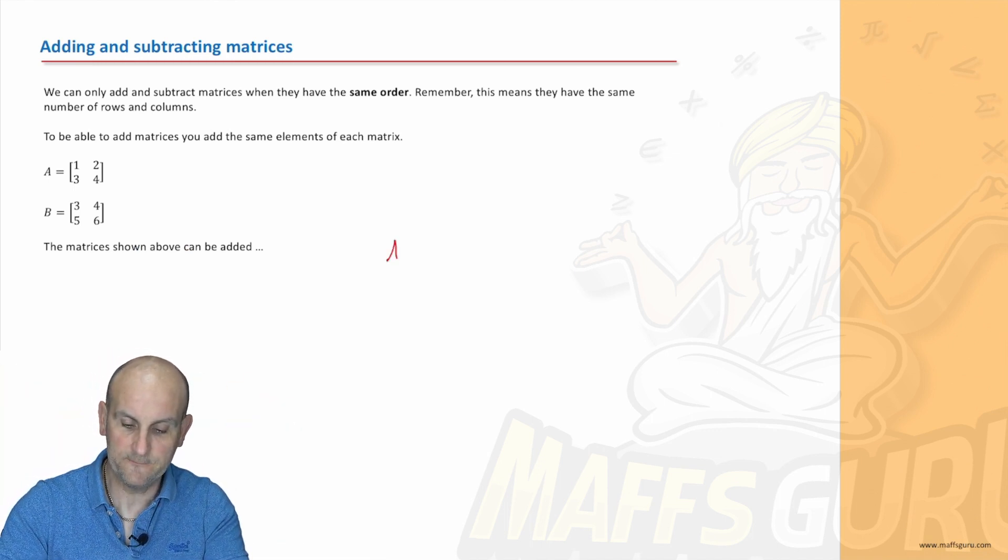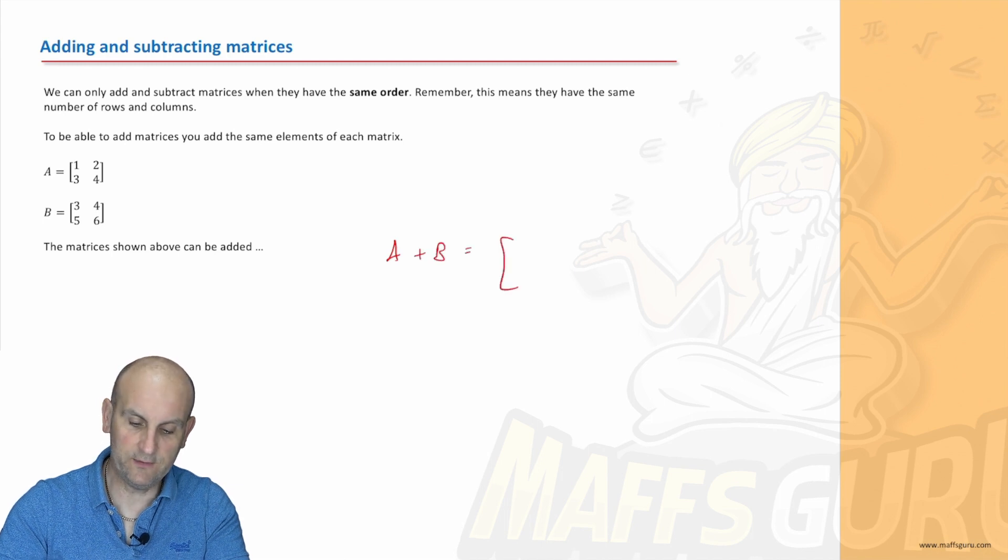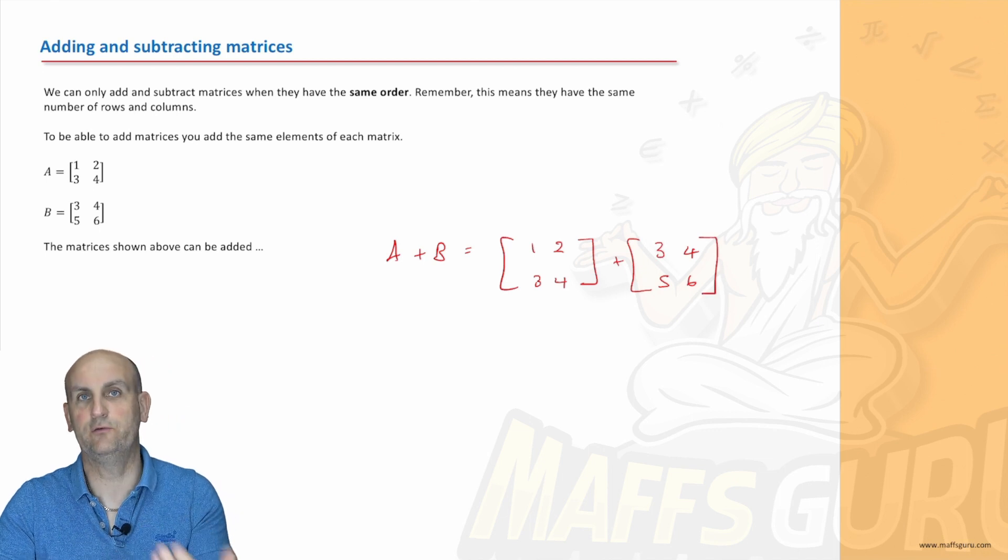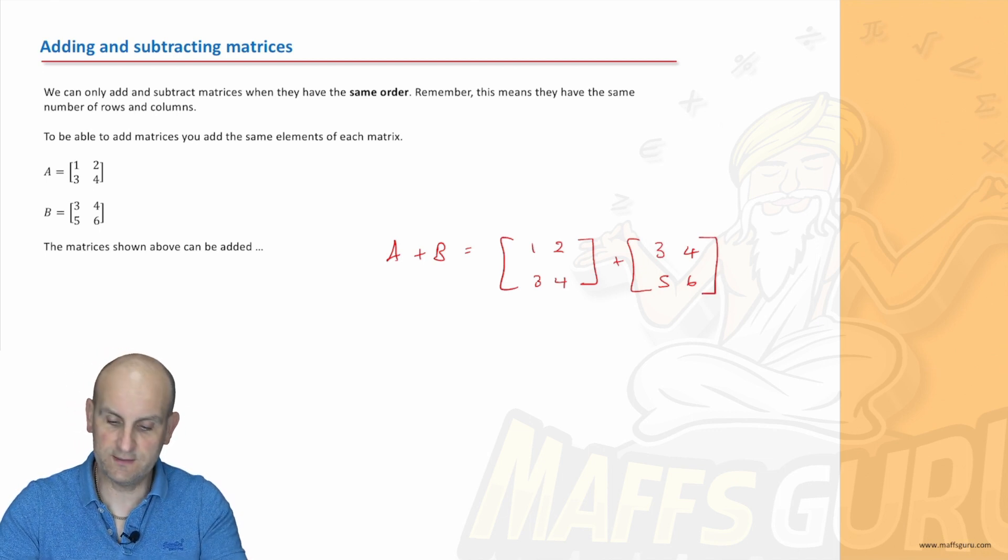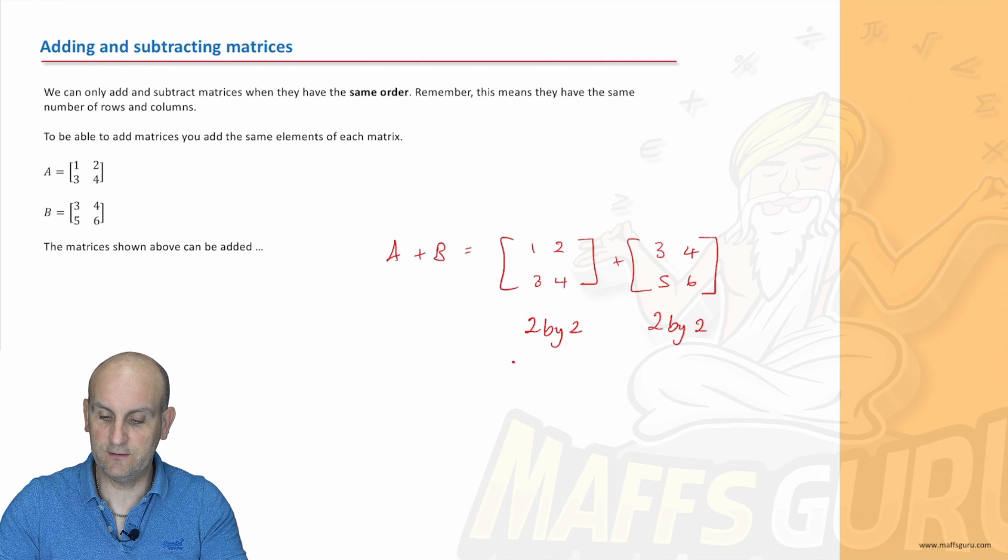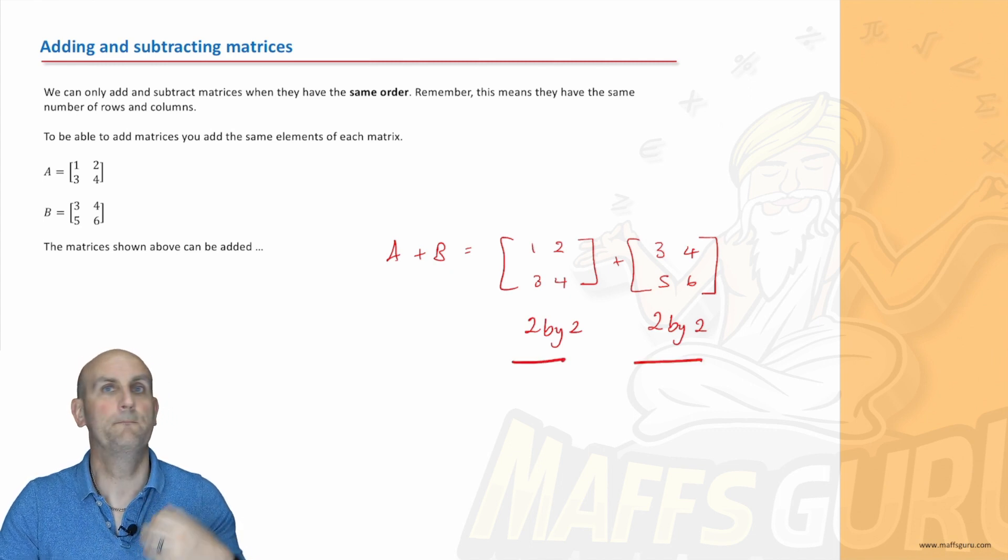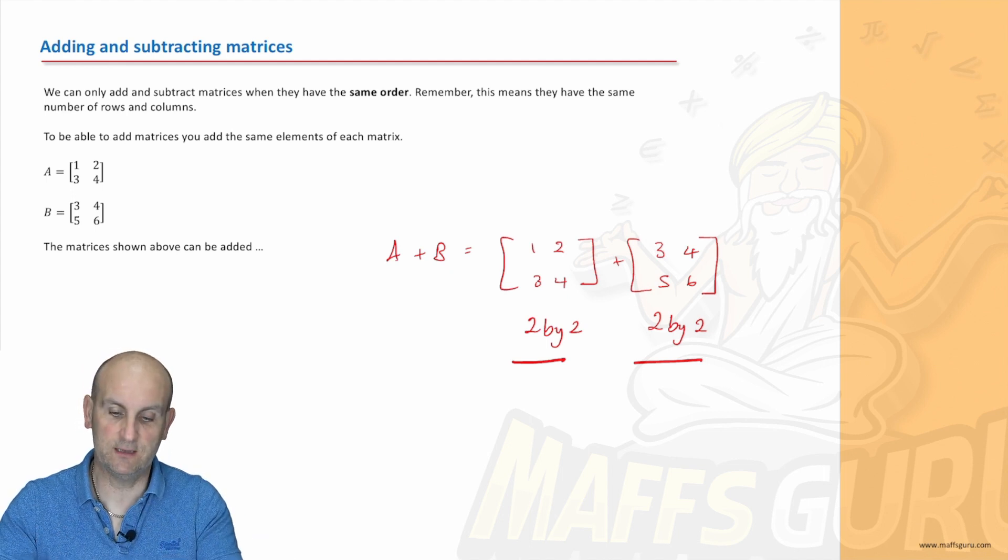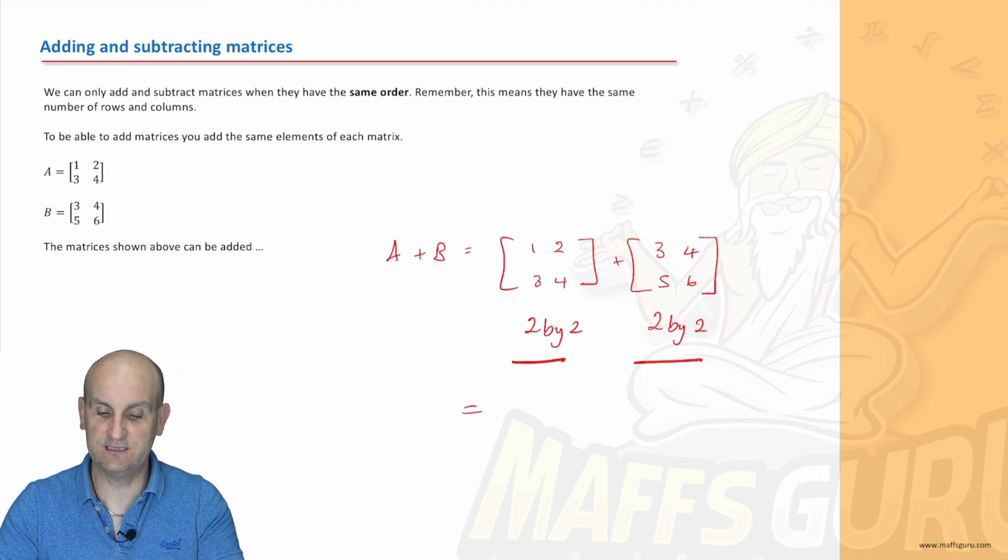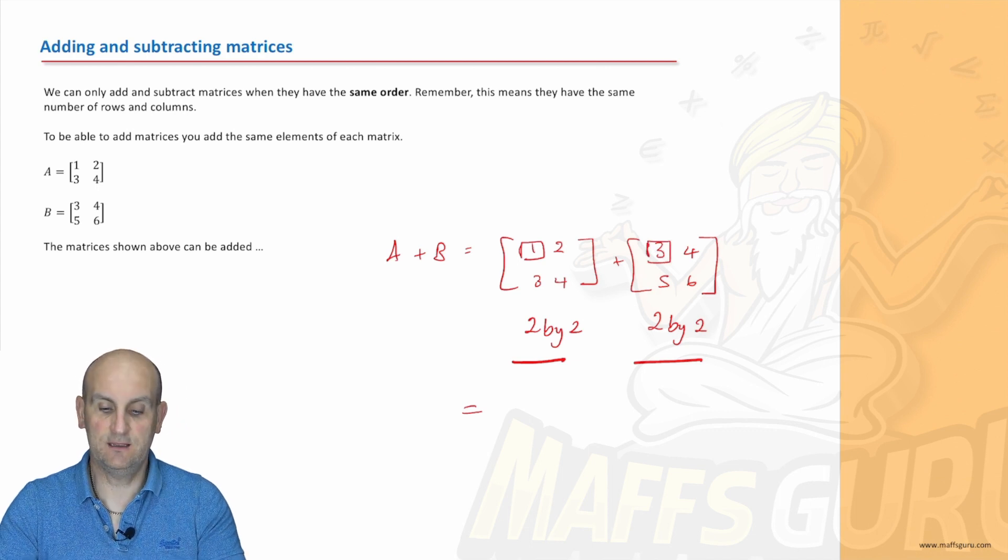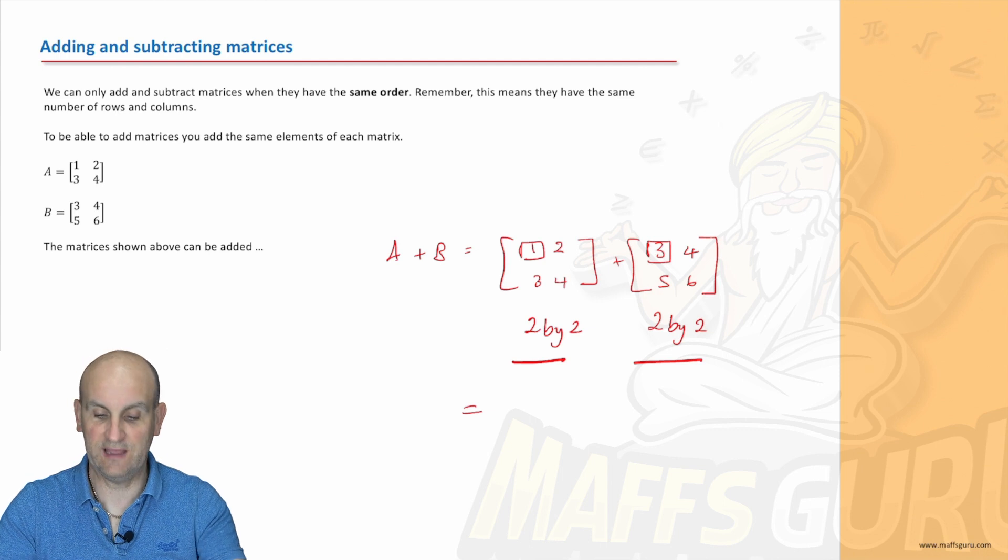For example, if we were going to work out A plus B, I'm going to write it out as an actual sum. Let's just check the order first - that's a two by two and that's a two by two. Doing this underneath the matrices is going to make a later video just fly by. Because they are the same, I'm going to add elements together. I'm going to add exactly the same positions together, so a11 and b11 are going to add together. I would do a11 plus b11, a12 plus b12, and so it goes on.